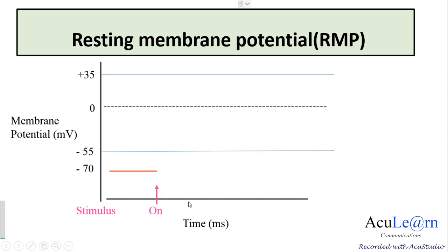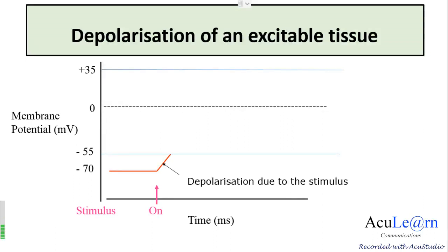When we apply a threshold stimulus to the cell membrane, at the point of stimulation there occurs a slow rise in the permeability of the membrane to sodium ions. This sodium influx causes the membrane potential to become less negative, changing from minus 70 millivolts and reaching up to minus 55 millivolts, which is the firing level or the threshold potential at which depolarization occurs rapidly.